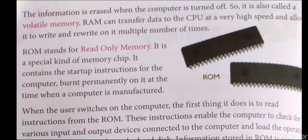RAM can transfer data to the CPU at very high speed and allows it to write and rewrite on it multiple number of times. Means RAM CPU को high speed से data देगा, जिससे multiple times काम होता जाए — मतलब speedily काम होता जाए।